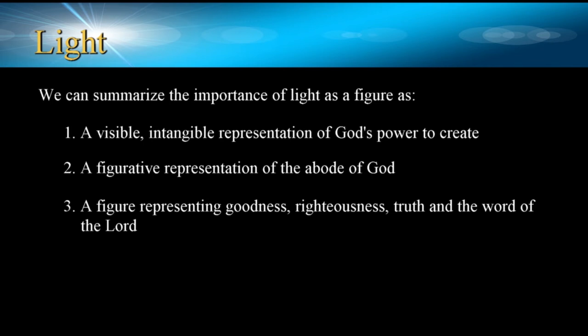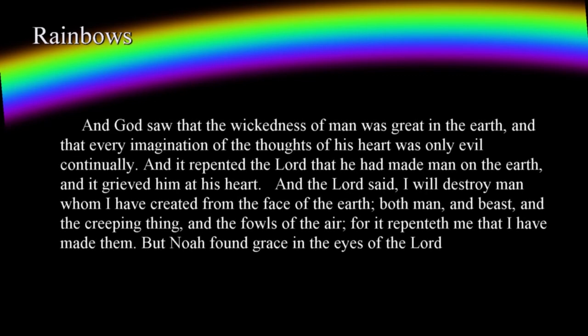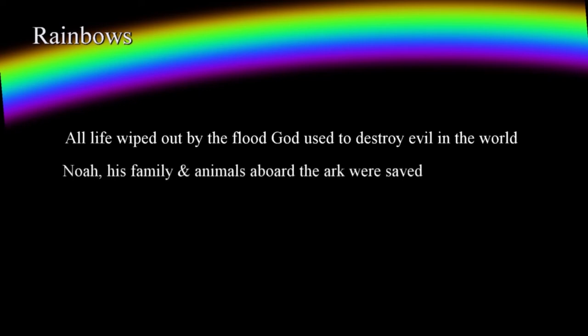One of the most recognized appearances in the Bible that incorporates light is the rainbow. Genesis tells us that as the population of mankind grew, problems emerged that angered the Lord: 'God saw that the wickedness of man was great in the earth, and that every imagination of the thoughts of his heart was only evil continually. And it repented the Lord that he had made man on the earth, and it grieved him at his heart. And the Lord said, I will destroy man whom I have created from the face of the earth, both man and beast, and the creeping thing, and the fowls of the air. For it repenteth me that I have made them. But Noah found grace in the eyes of the Lord' — Genesis 6:5-8. The Bible reveals that all life was wiped out by the flood, with the exception of Noah, his family, and the animals preserved aboard the ark.